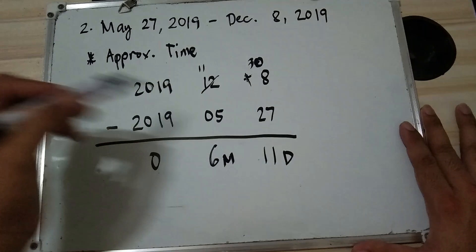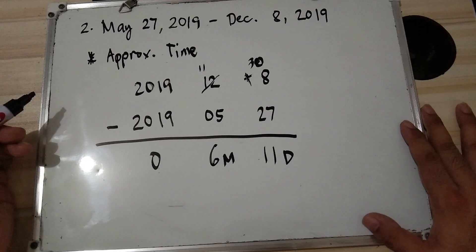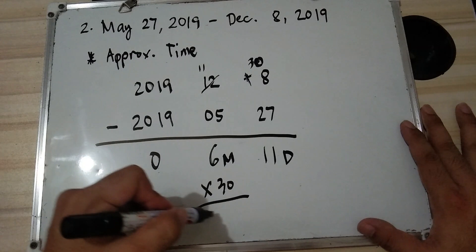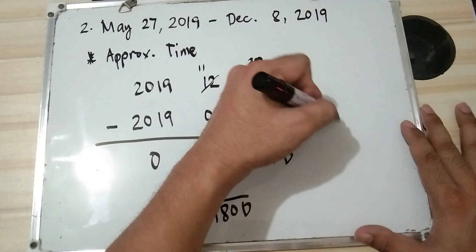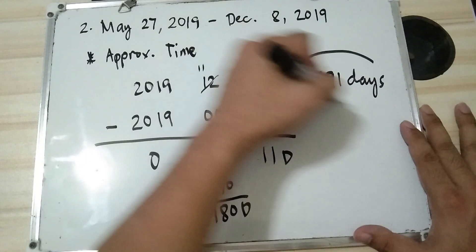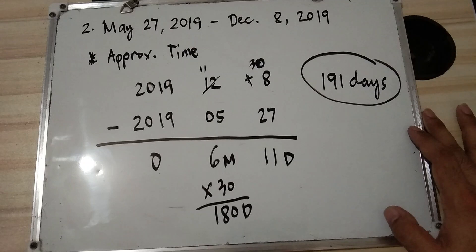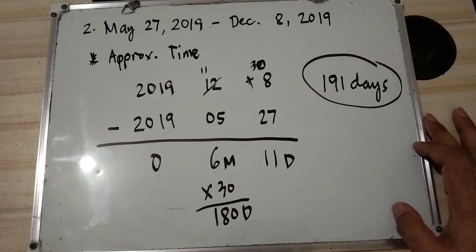So we have 6 months and 11 days. For approximate time, 1 month equals 30 days, so 6 times 30 equals 180 days, plus 11 days equals 191 days. The approximate time from May 27, 2019 to December 8, 2019 is 191 days.